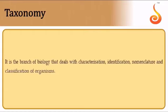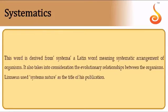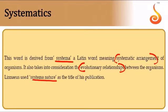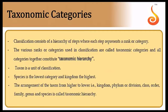Taxonomy deals with identification, classification, and nomenclature. When we also take into consideration evolutionary relationships along with comparative features, this broader process is called systematics. The word is derived from 'systema,' meaning systematic arrangement. Linnaeus published a book called Systema Naturae in which he specifically dealt with the taxonomy of animals.